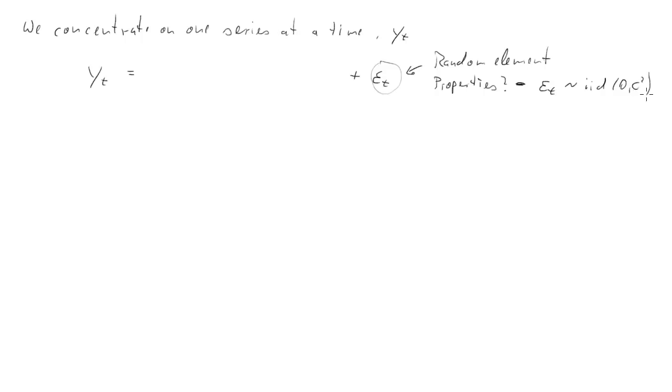Is that epsilon t is iid with zero mean and some constant variance. So that's identically and independently distributed. The alternative is that this is a somewhat weaker assumption, although there's still quite a bit of restriction in here. So this is less strict.